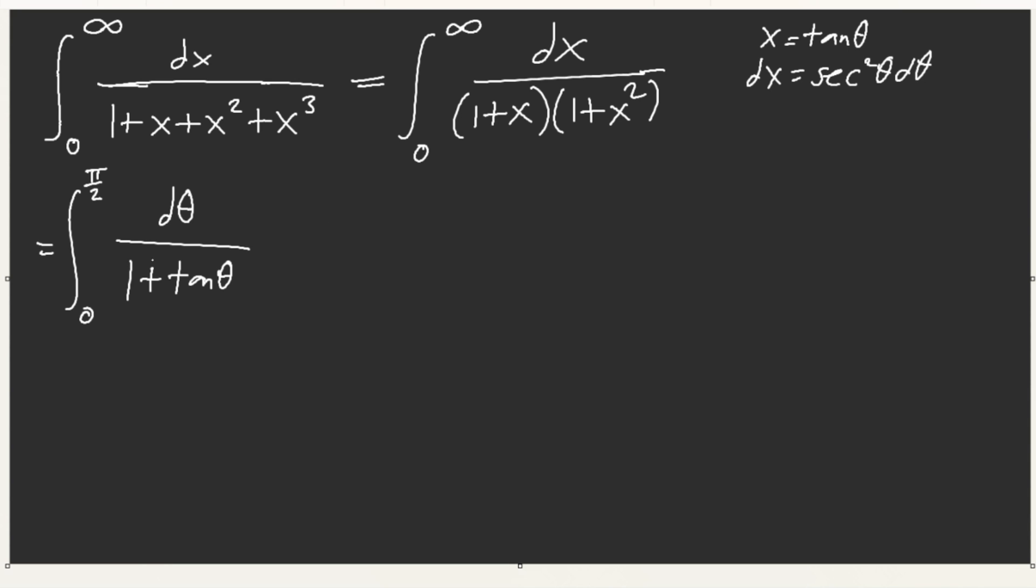Let x equal tan(θ). So what's going to happen is we get from 0 to π/2. When dx equals sec^2(θ)dθ, it's going to cancel out this. So what we actually end up getting is dθ/(1 + tan(θ)) because of this. That 1 + x^2 cancels out the sec^2(θ). Now, we have this integral. Oh, it's so much easier. So much easier because now look at this.